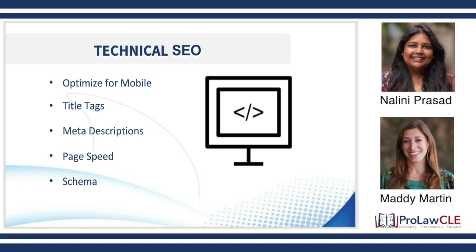Schema, or structured data, is the dictionary that Google has put out for coding. It tells you exactly how to code every aspect of a website. You want to make sure that is correct, because more and more on the front end, Google is automatically pulling information from your website — showing certain items that you don't even know might be on your website.